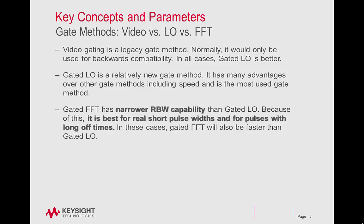Gated LO is a relatively new gate method. It has many advantages over other gate methods, including speed, and is the most used gate method. Gated FFT has narrower RBW capability than gated LO. Because of this, it is best for real short pulse widths and for pulses with long off times. In these cases, gated FFT will also be faster than gated LO.